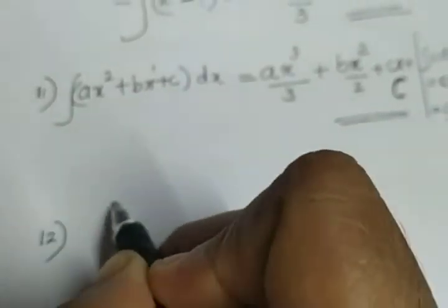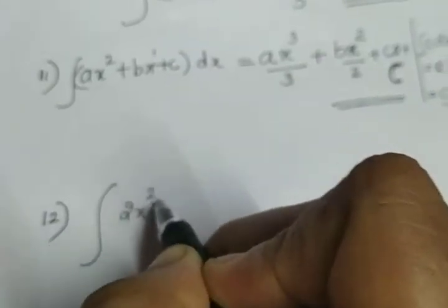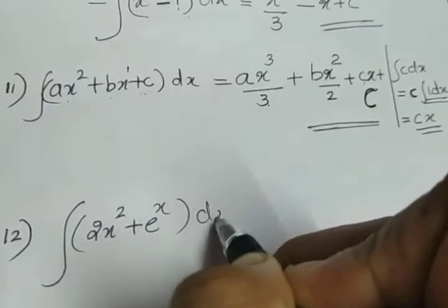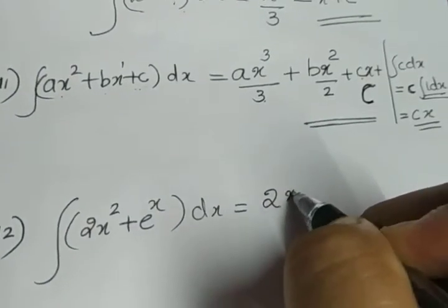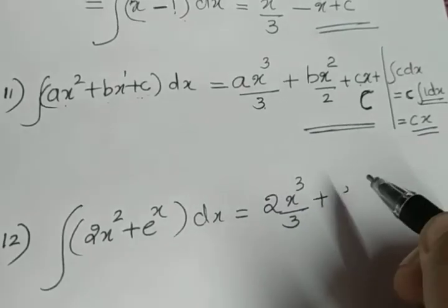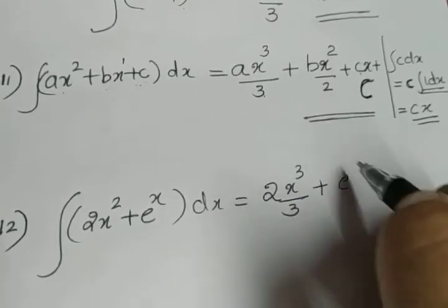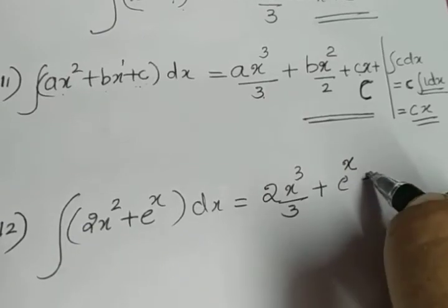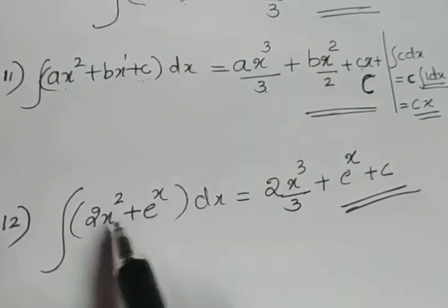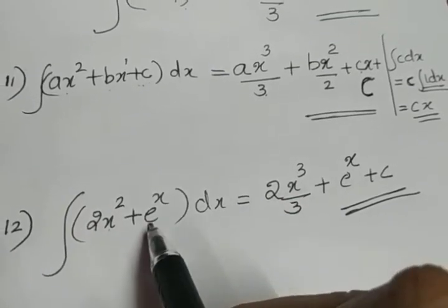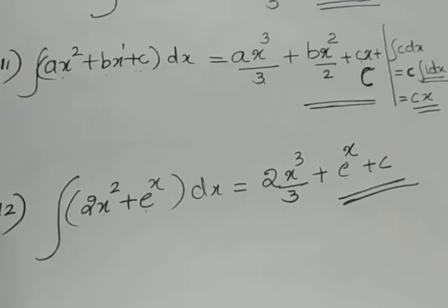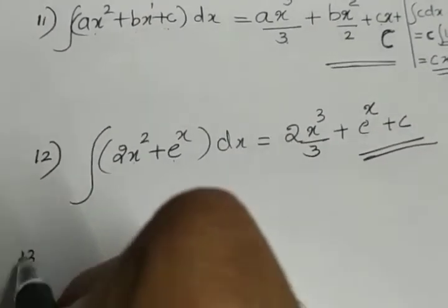Moving to the next one: integral of (2x² + eˣ) dx. In the first term, 2 is a constant; integral of x² is x³/3. The integral of eˣ is eˣ itself. So the answer is 2x³/3 + eˣ plus constant of integration C.